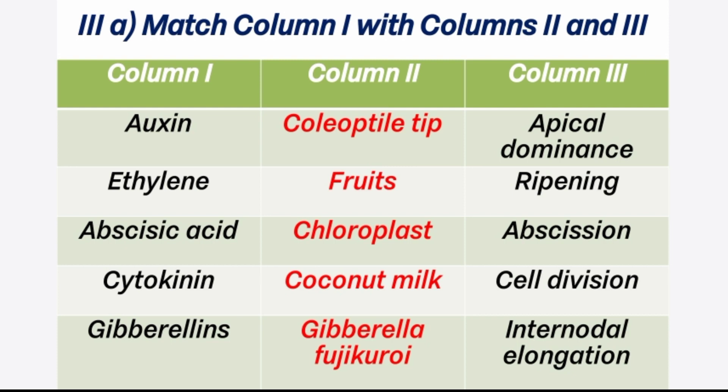Match the following — plant hormones: 1st hormone, Auxin — found in coleoptile tip, used for apical dominance. 2nd hormone, Ethylene — used for ripening of fruits. 3rd, Abscisic acid — involved in the abscission process, meaning the separation of parts of a plant like fruit and leaves. 4th hormone, Cytokinin — mostly found in coconut milk, used for cell division. 5th, Gibberellin — involved in stem elongation.